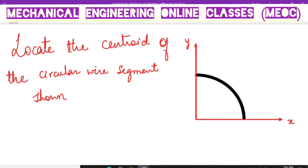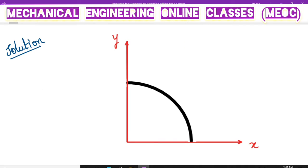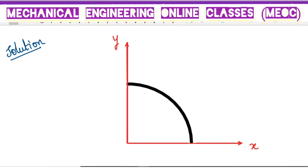X, Y axes are given. The circular arc is in the first quadrant. The black strip that we are seeing is the wire for which we have to find the centroid. According to the procedure we have discussed previously, the first thing to look at is whether X, Y axes are given — if so, we have to consider those X, Y axes only. If not given, then we can consider something else, as we have already discussed.